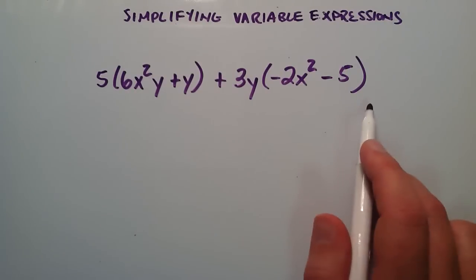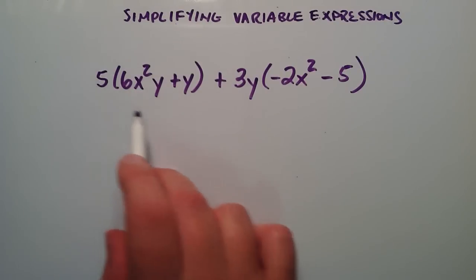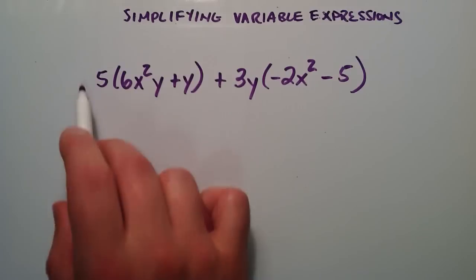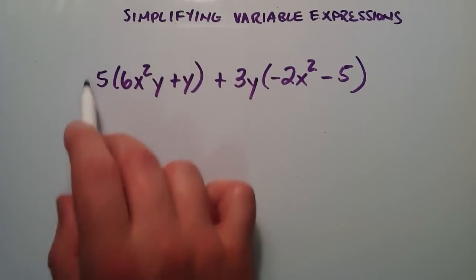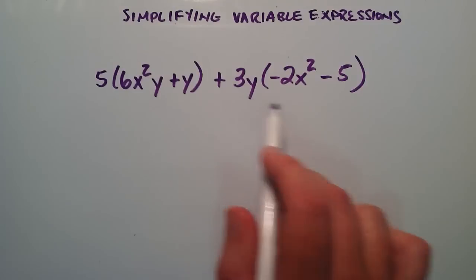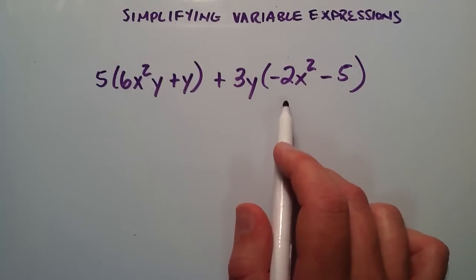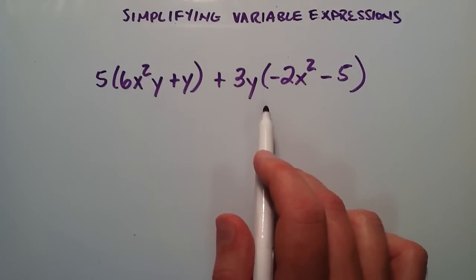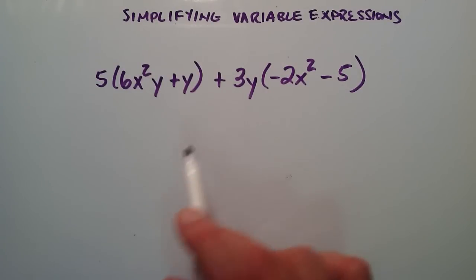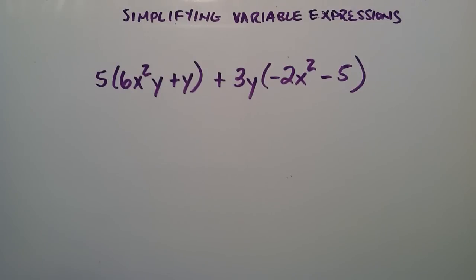The way we're going to simplify this is we're going to apply the distributive property to this part, and then we'll apply the distributive property to this part. We will simplify the terms as much as we can, and then we will combine like terms, and then we will have our simplified answer.